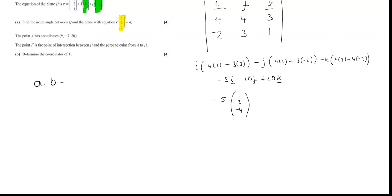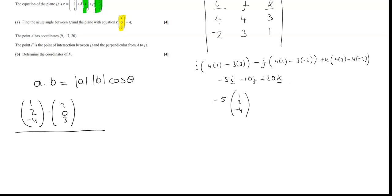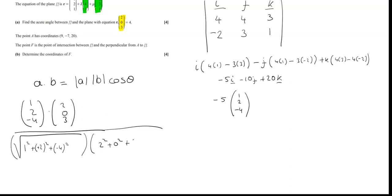Now I want to find the angle between that normal and the normal to the other plane, which was (2, 0, 3). To do that, we use a·b = |a||b|cosθ. So a·b is (1, 2, −4) dotted with (2, 0, 3), divided by the magnitude of a — that's √(1² + 2² + (−4)²) — times the magnitude of b — that's √(2² + 0² + 3²).